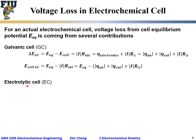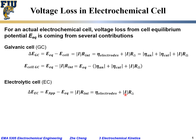For the electrolytic cell (EC), there is also a voltage loss, but this time you are applying a potential typically higher in absolute value than the equilibrium cell potential. The loss from your applied voltage versus the equilibrium is the voltage loss, and it can still be written as |I| times the total internal resistance. This breaks down into an ohmic contribution and an electrode contribution — expanding into anode overpotential, cathode overpotential, and ohmic loss, all in absolute value.